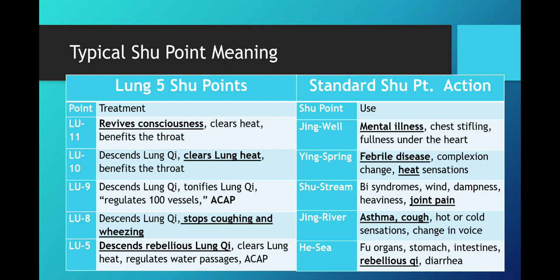Lung 9 is the Shu Stream. It descends lung qi, tonifies lung qi, regulates the 100 vessels, and activates the channel to alleviate pain — relating back to the Shu Stream's joint pain indication. Lung 9 sits right on the wrist where joint pain is most likely. Then Lung 8 descends lung qi and stops coughing and wheezing, which relates to the Jing River's indications of asthma, cough, hot or cold sensations, and change in voice.